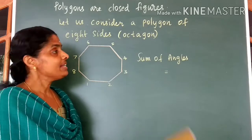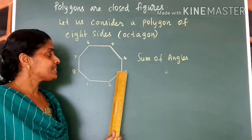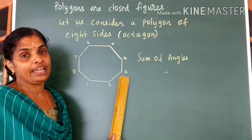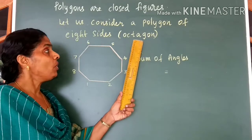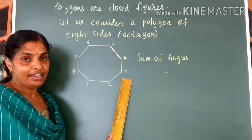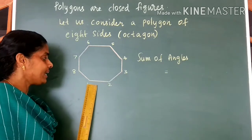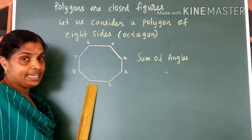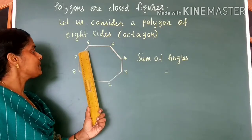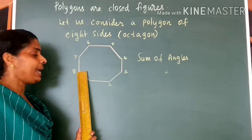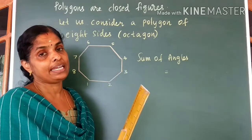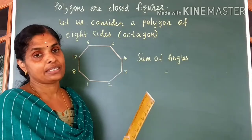Next, let us look at an eight-sided figure. Your eight-sided polygon is called an octagon. I have drawn the figure here. You can see there are eight vertices — one, two, three, four, five, six, seven, eight vertices. For an octagon there are eight vertices and eight sides.